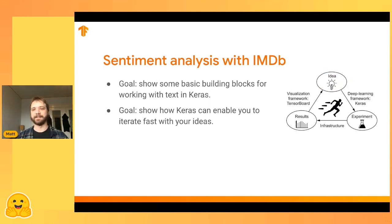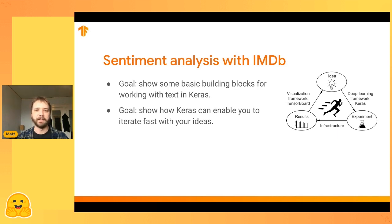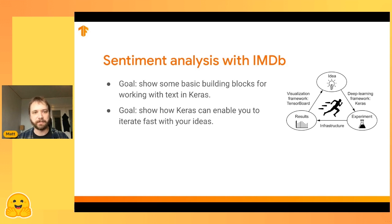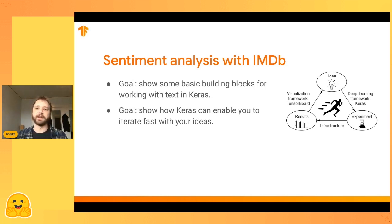Now I'll cover basic NLP models we can build with Keras, using the IMDB sentiment analysis dataset. It has 25,000 reviews in the training set — movie reviews of about three paragraphs — and we're building a model to predict whether a review is positive or negative. My goal is to show basic building blocks for working with text in Keras, and the main thesis is that using Keras you can go very quickly from an idea to an experiment to results, informing the next experiment in a tight loop.